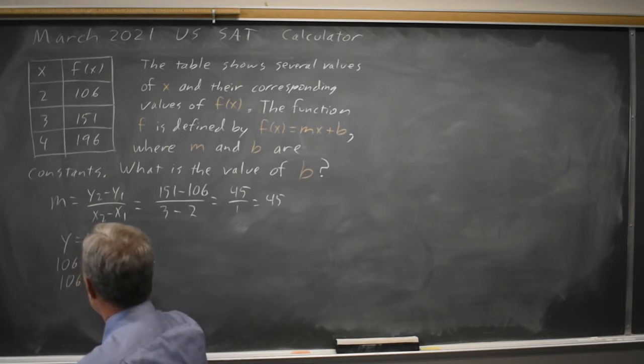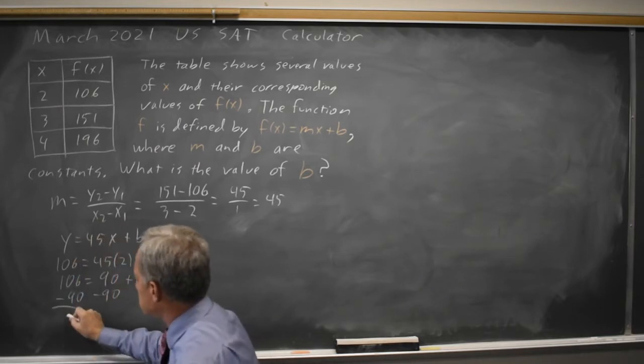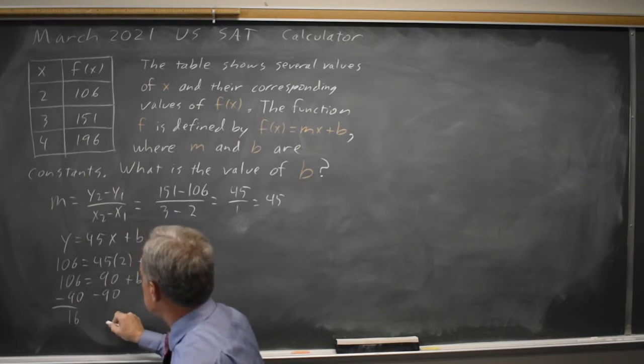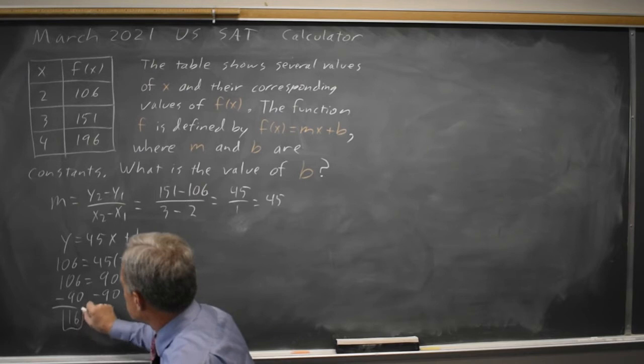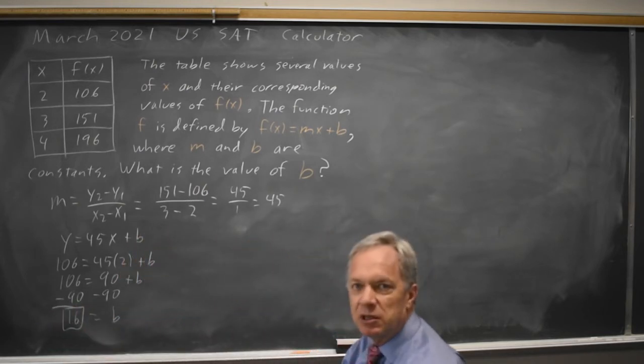So 106 equals 90 plus b. Subtracting 90 from each side of this equation, 106 minus 90 is 16 equals b. Their question was, what is the value of b? So b equals 16.